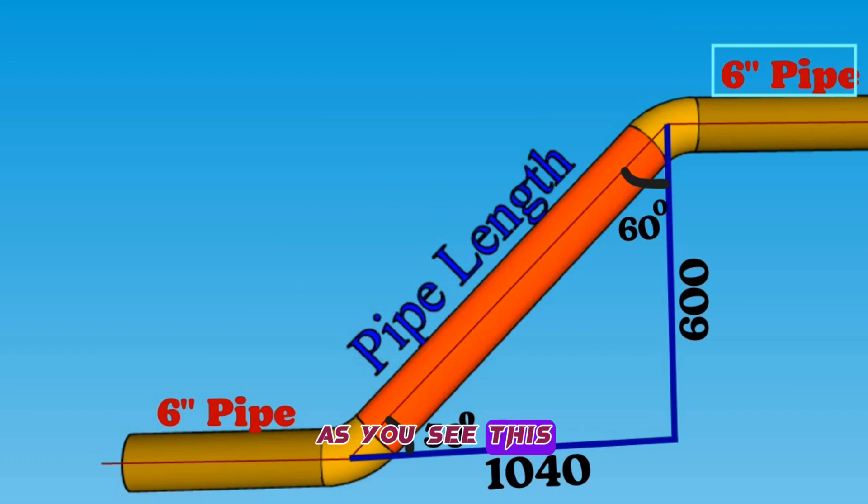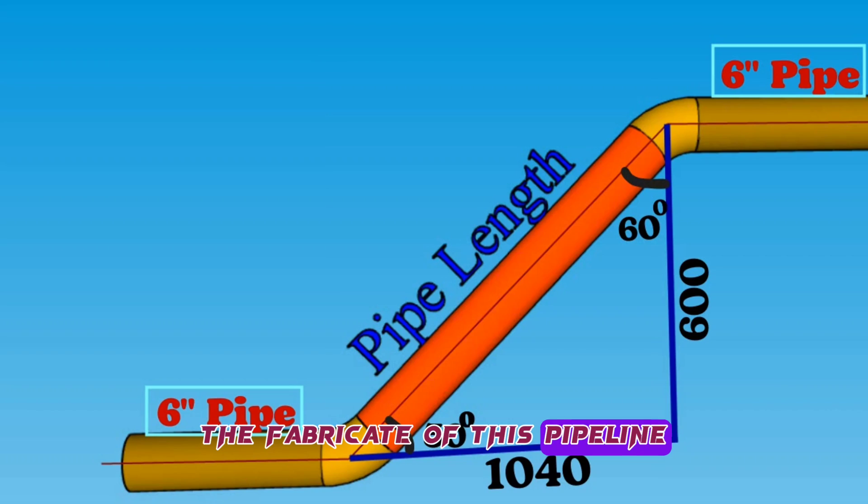As you see, this is a 6-inch pipeline. We need to calculate the length of the red color 6-inch pipe piece used in the fabricate of this pipeline.